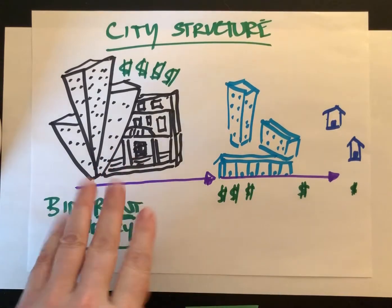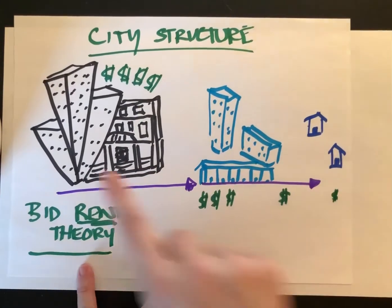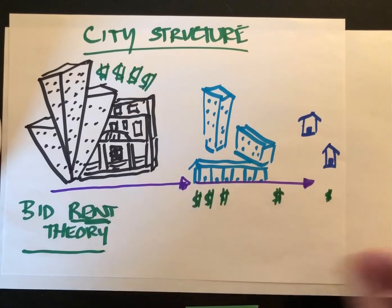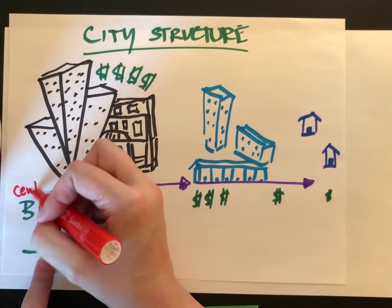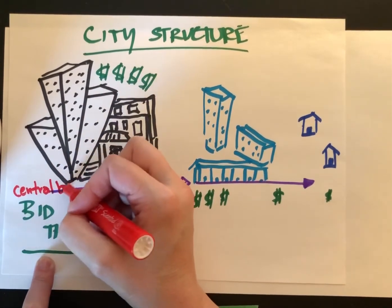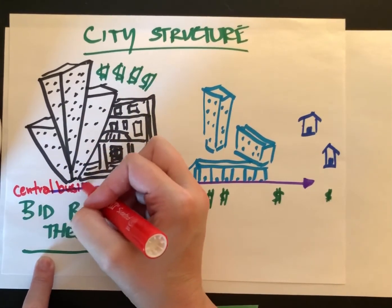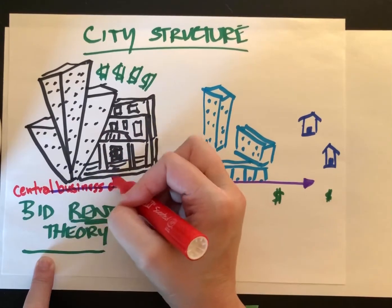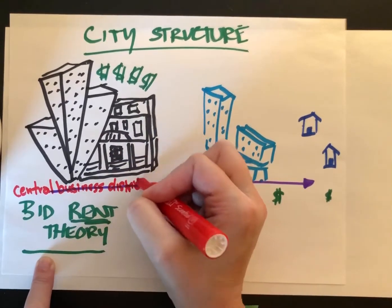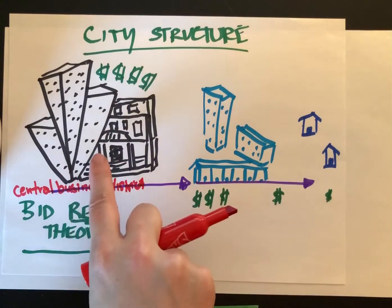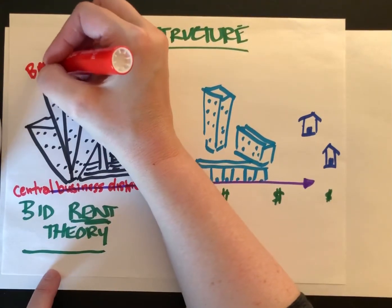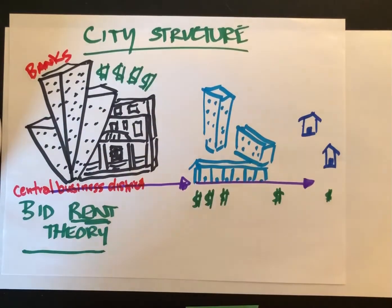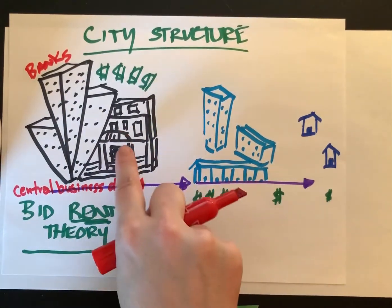If we have our downtown core — that's the central business district — it has the most expensive rents. It's often where the banks are and often where the government buildings are.